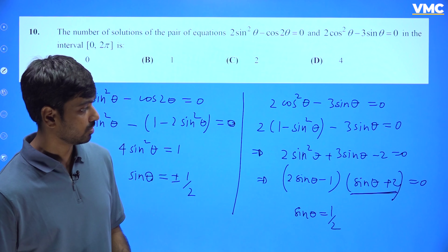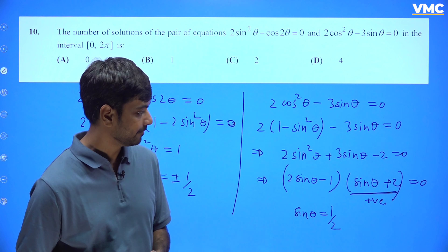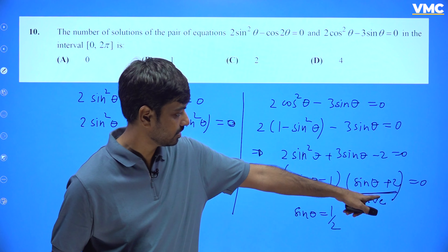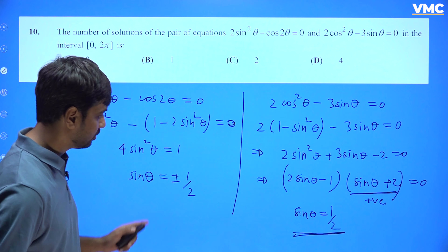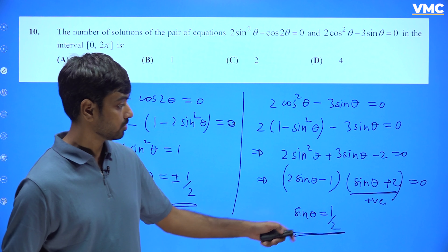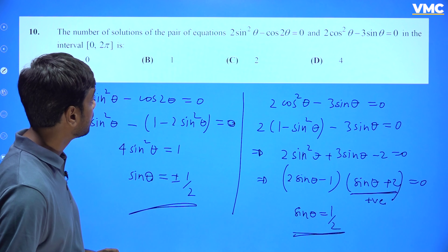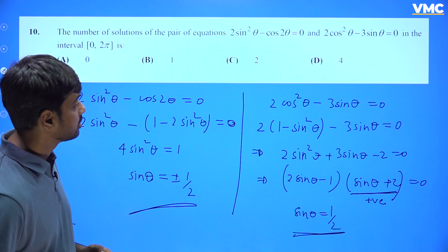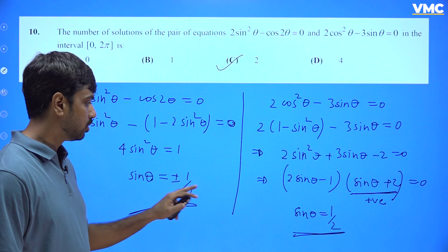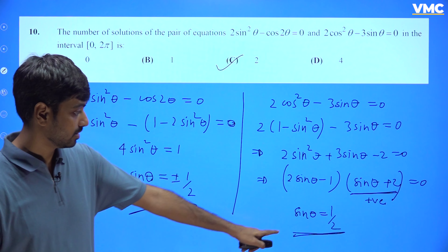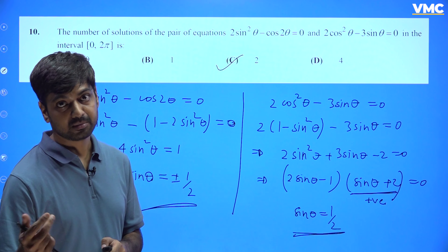Since sin θ + 2 is always positive, the only valid solution from the second equation is sin θ = 1/2. The common solution from both equations is sin θ = 1/2. In [0, 2π], sin θ = 1/2 gives θ = π/6 and θ = 5π/6. So the number of solutions is 2.